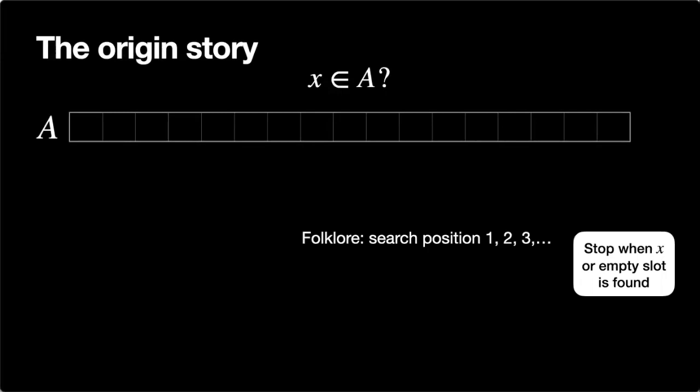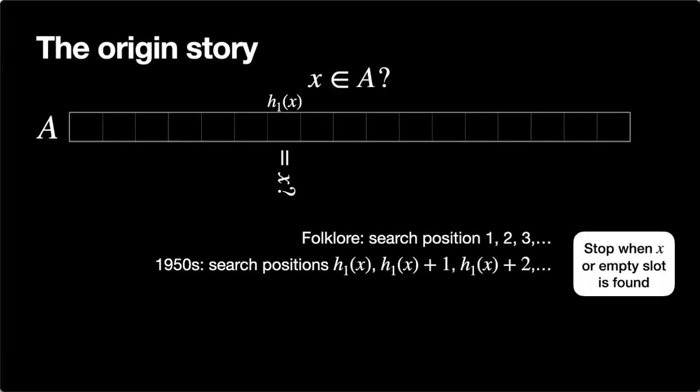It's possible to do much better. Already in the 1950s, researchers investigated what happens if you don't use the same search sequence for each element x, but instead choose a random position given by a hash function h1(x) that tells you where to start searching. You first look at position h1(x), then the next position and so on, until you find x or an empty slot. This gives a much better search speed, especially if h1 behaves like a random function, so keys are distributed evenly across the table.